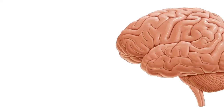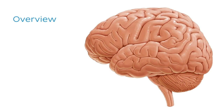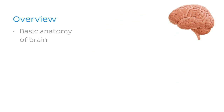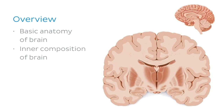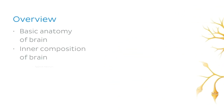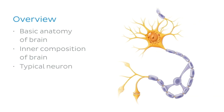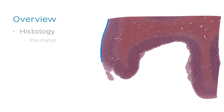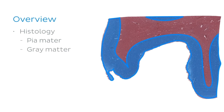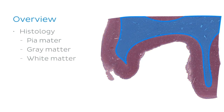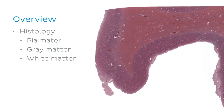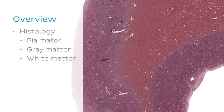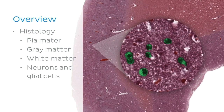So you must be wondering what exactly you'll be learning today. We will start with a recap of some very basic anatomy of the brain, followed by a quick discussion on the inner composition of the brain, and a reminder of the structure or parts of a typical neuron. We will then jump into the histology of the cerebral cortex, starting with the pia mater that covers the brain.